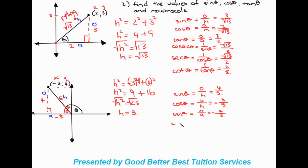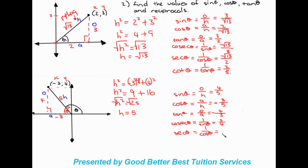Now we move on to the reciprocals. Cosec theta is one over sine theta — this gets repetitive, but that's so you remember it. We just flip sine theta to get five over four. Sec theta is one over cos theta — flipping that gives us minus five over three. And cot theta is one over tan theta, which gives us minus three over four.